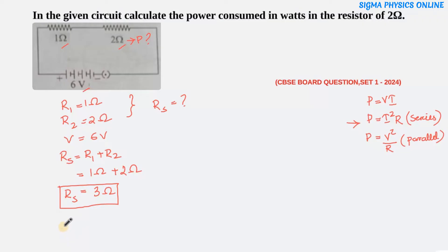Now we need to find the current using Ohm's law. From Ohm's law, V = IR, so current I = V/R. The potential difference is 6 volt and resistance is 3 ohm, so the current is 2 ampere.